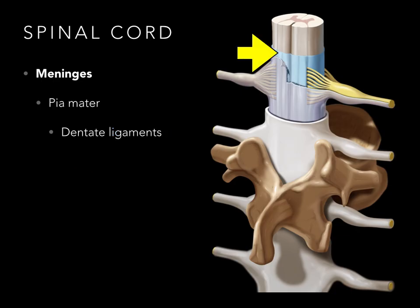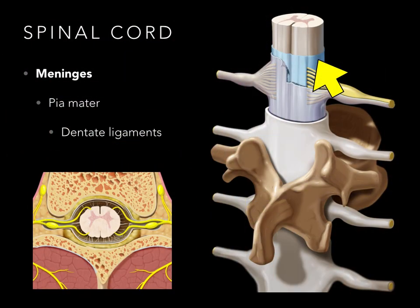Next is our pia mater. This is the loose connective tissue that's completely knitted to the spinal cord, where only a couple of places can you differentiate the pia mater. In blue, there's the pia mater — these teeth-like projections that go from the spinal cord to the surrounding dura mater. They're called dentate ligaments because they look like sharp teeth, or denticulate ligaments. They tether the spinal cord laterally to prevent the spinal cord from jiggling back and forth.